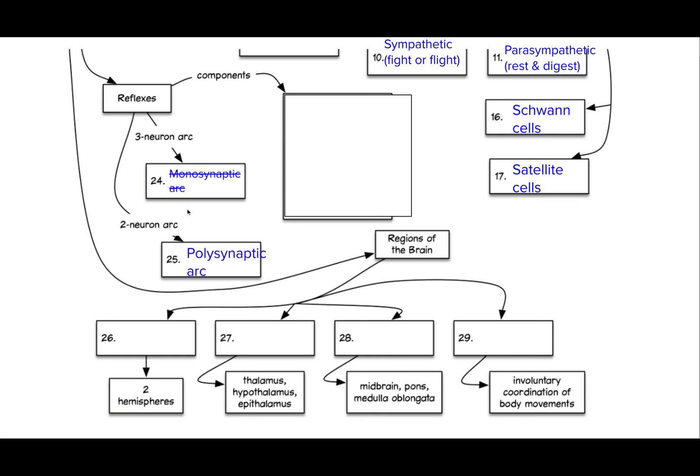So moving over to our reflexes, there are two different types, the polysynaptic and the monosynaptic. We do not talk about a monosynaptic arc, so you can cross that off. But this is just talking about what a reflex is when nerves are coming in and out of the spinal cord.